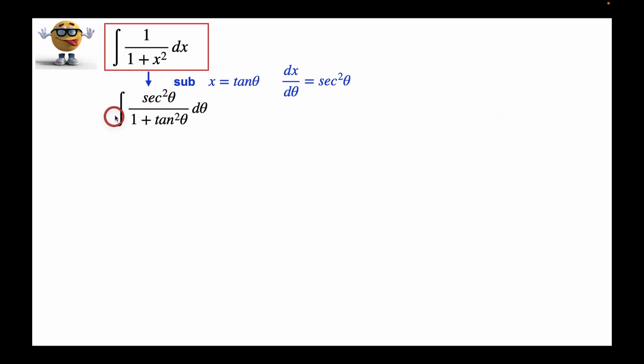So with that substitution, this becomes secant squared d theta divided by 1 plus tan squared theta, because if we solve for dx here, it's secant squared d theta, so that would substitute in.